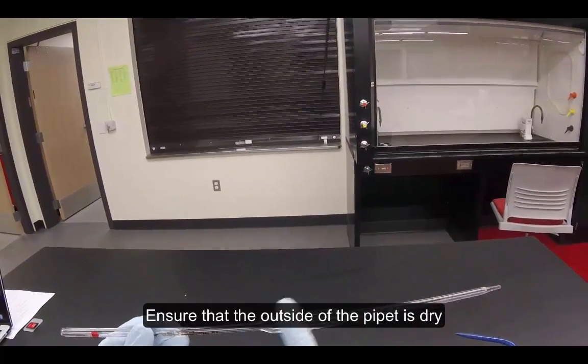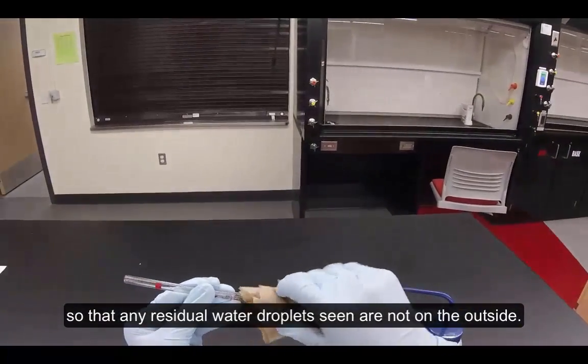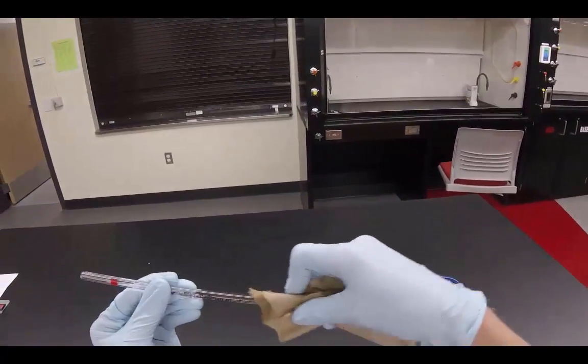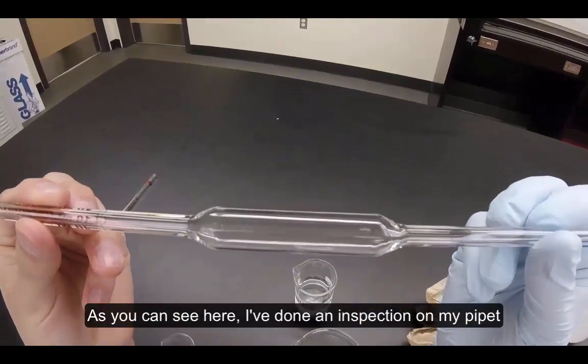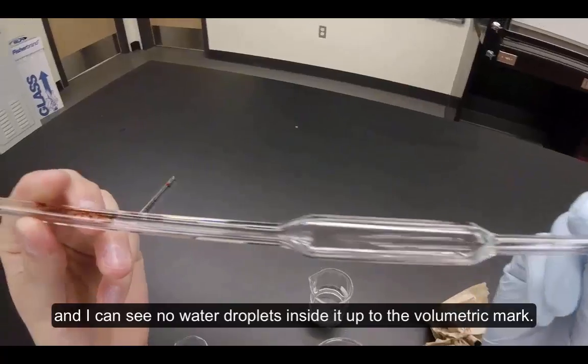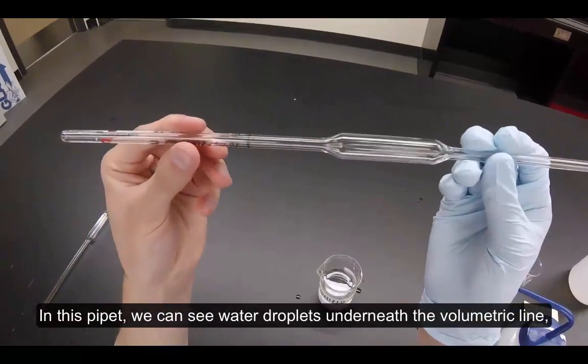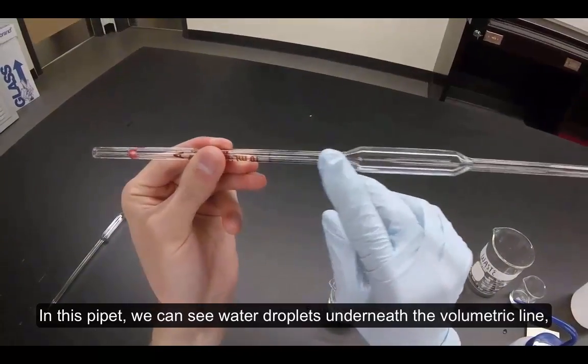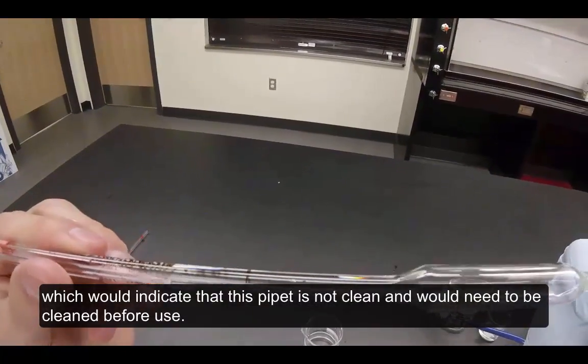Ensure that the outside of the pipette is dry so that any residual water droplets seen are not on the outside. As you can see here, I've done an inspection on my pipette and I can see no water droplets inside of it up to the volumetric mark. In this pipette, we can see water droplets underneath the volumetric line, which would indicate that this pipette is not clean and would need to be cleaned before use.